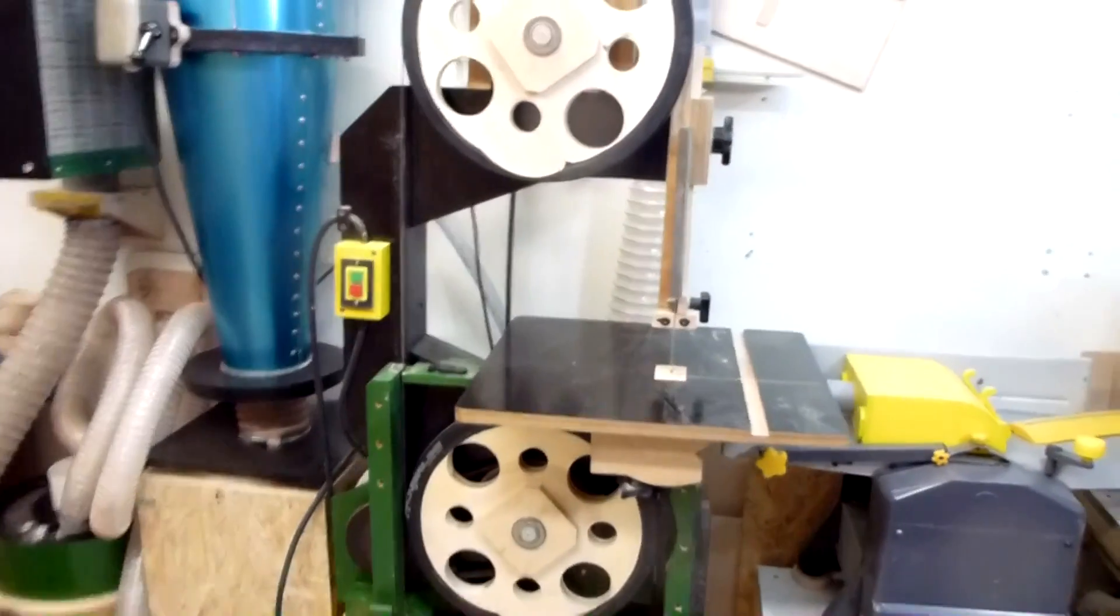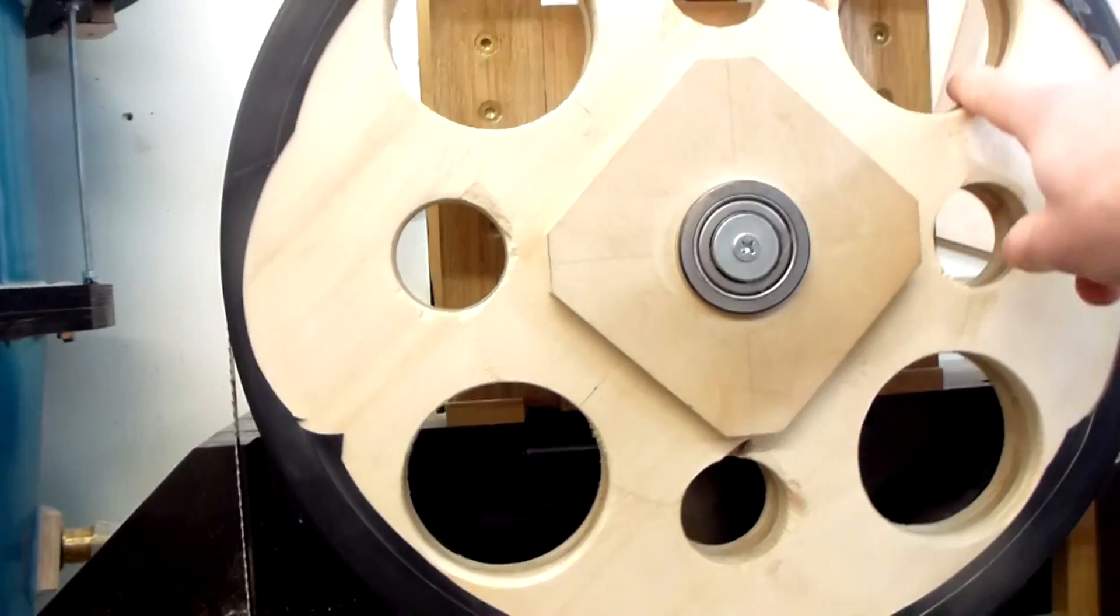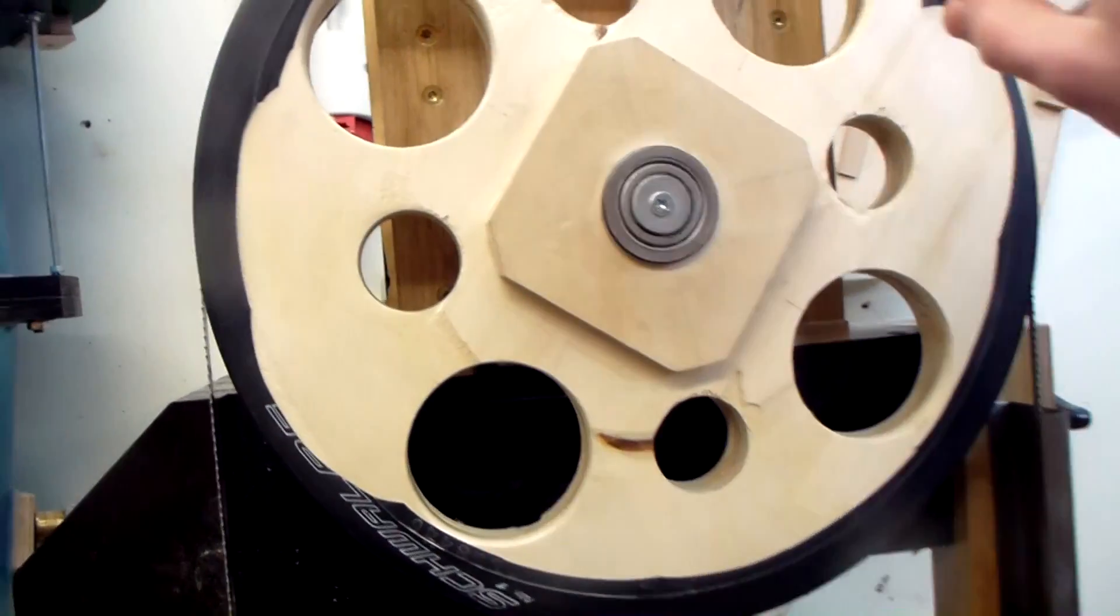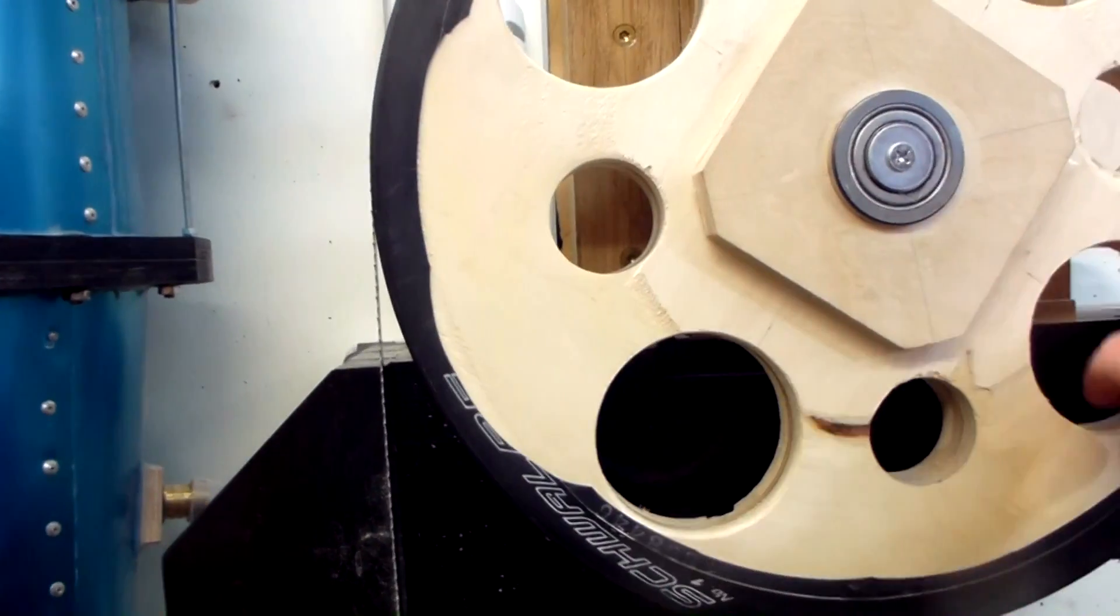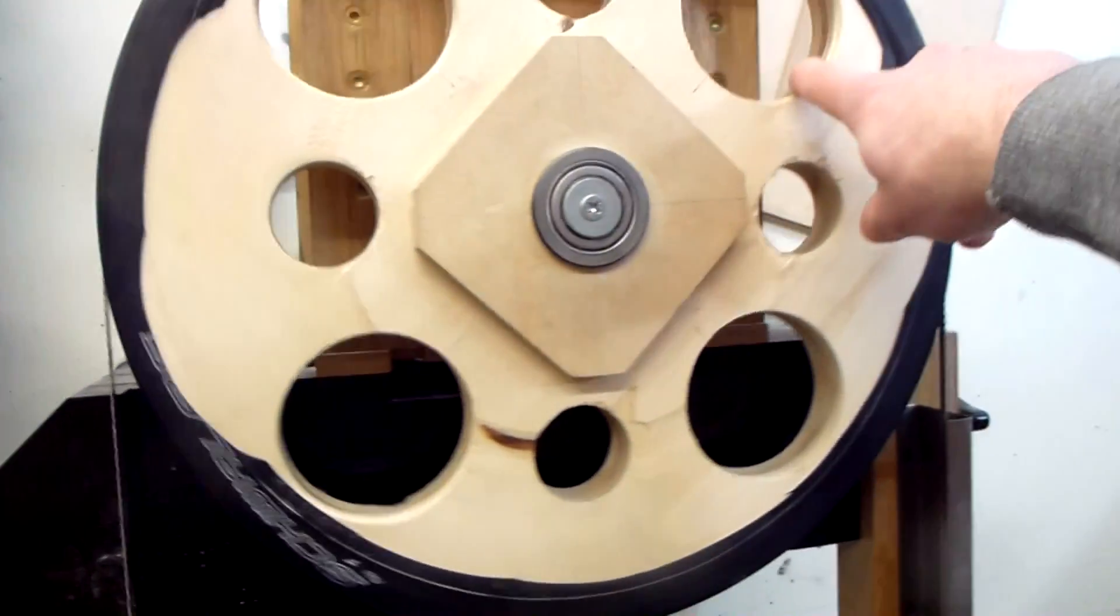But the high blade speed also brought some problems with it. Because the wheels now spin much faster, I got a lot more vibration on the saw. And I had to lighten the wheels, so I cut big holes into it and also rebalanced them better. And now they can handle this high rpm and the saw doesn't start to vibrate.